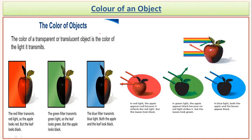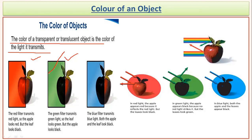Now let's understand the concept of the color of an object. If an object is transparent or translucent, then the color of the object is the light which is transmitted through it. For example, if you see light under a red film it will appear red; under a green film it will appear green. This is because only that particular color can be emitted out from that body.